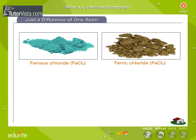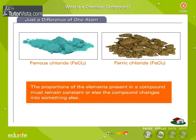Just the difference of one atom. The compounds displayed here may not look alike, but they are made of the same elements, iron and chlorine. The only difference between them is one atom. Ferrous chloride, FeCl2, has one atom of chlorine lesser than ferric chloride, FeCl3. The proportions of the elements present in a compound must remain constant, or else the compound changes into something else.